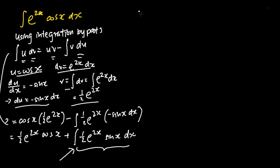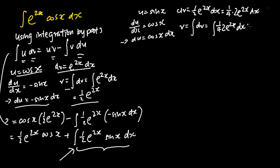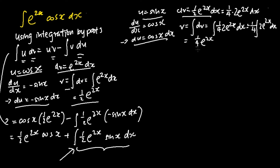We will now let u be equals to sine x. And my dv be equals to half e to the power of 2x dx, which is the same as one-quarter times 2 e to the power of 2x dx. To find my du, I differentiate u with respect to x, which gives me cosine x, so du equals to cosine x dx. To get my v, I integrate dv, which is the integration of one-quarter e to the power of 2x dx, and my v equals to one-quarter e to the power of 2x.